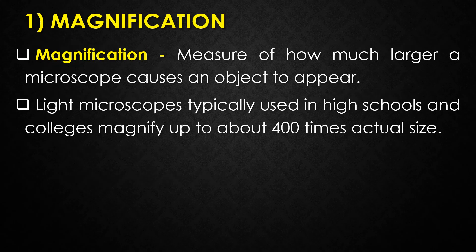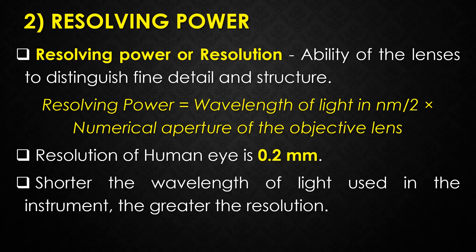The first parameter is magnification. Magnification is a measure of how much larger a microscope causes an object to appear. For instance, the light microscopes typically used in high schools and colleges magnify up to about 400 times the actual size, so something that was one millimeter wide in real life would be 400 millimeters wide in the microscopic image.